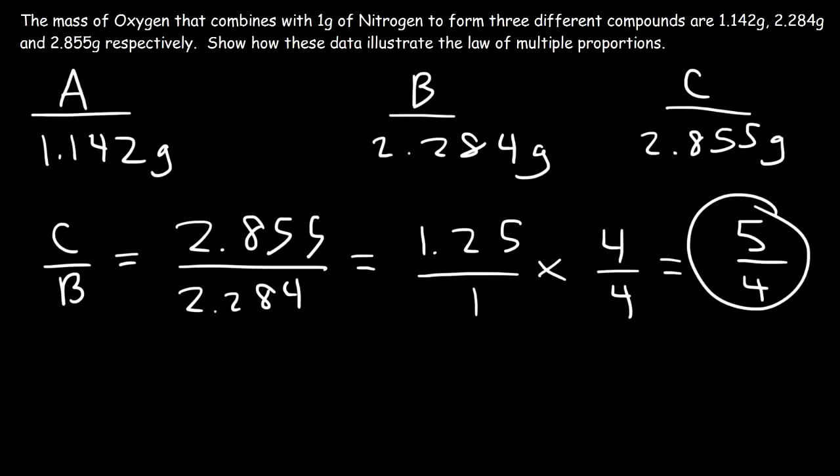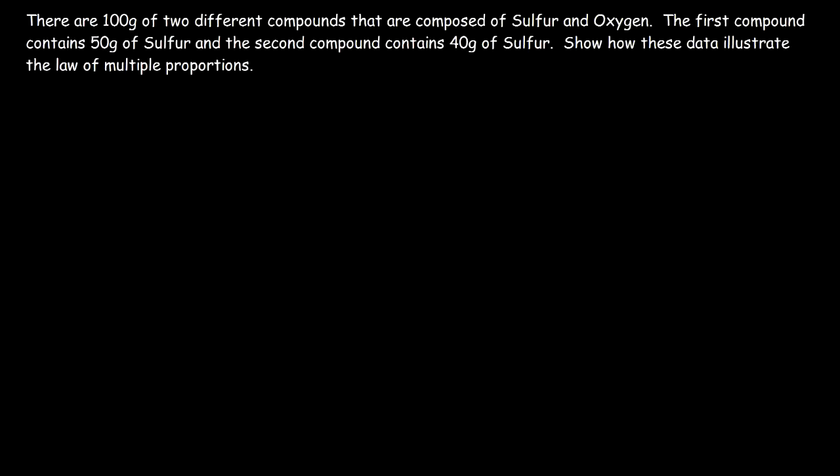As you can see, the ratio between any of these compounds — the ratio of the masses of the second element, oxygen — can all be reduced to a whole number. That's how we show that this data illustrates the law of multiple proportions. Here's another problem: there are 100 grams of two different compounds composed of sulfur and oxygen. The first compound contains 50 grams of sulfur and the second compound contains 40 grams of sulfur.